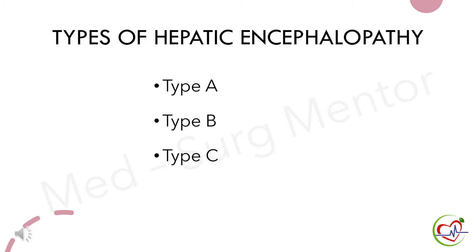Types of hepatic encephalopathy. There are mainly three types: Type A, B, and C. Type A occurs in acute liver failure. Type B occurs in people who have a shunt that connects between two veins inside the liver. Whereas Type C occurs in chronic liver disease and scarring.